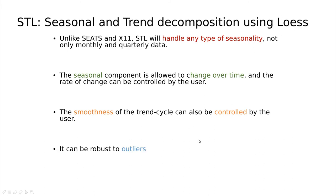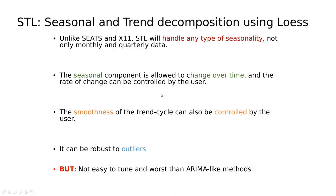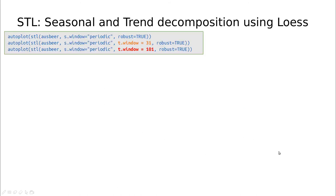LOESS is non-parametric, so it handles outliers pretty nicely — something the other methods can't do very well. There is a small caveat though: because you can control smoothness, there is sometimes too much freedom to tune the model, so it performs worse than ARIMA-like methods. Sometimes you have to use cross-validation to find the best choice, and this is not simple to use.